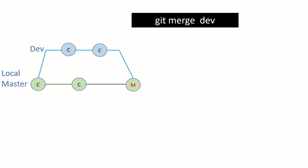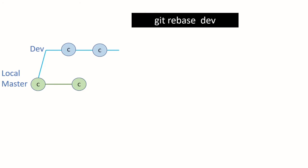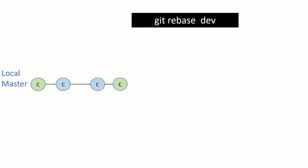Next I'm going to show you the rebase. I'm going to type git rebase dev. What rebase does is bring all your commits from your dev branch and basically move them on top of your master branch commits like this.